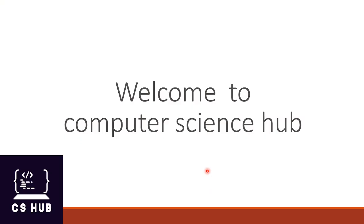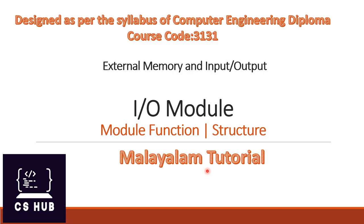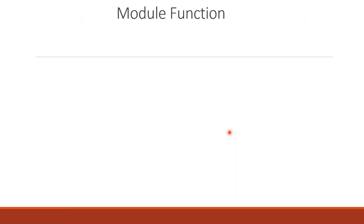Hello everyone, welcome to Computer Science Hub. Today's topic is the IO module. This video is designed as per the syllabus of Computer Architecture, course code 3131. Currently we are at the second module: external memory and input/output. Today we are going to discuss the IO module, its functions and structure.